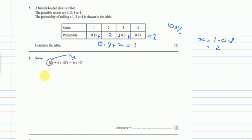So it will be w plus 4 times 10 to the power 3 is equals to 6 times 10 to the power 4 divided by 5.